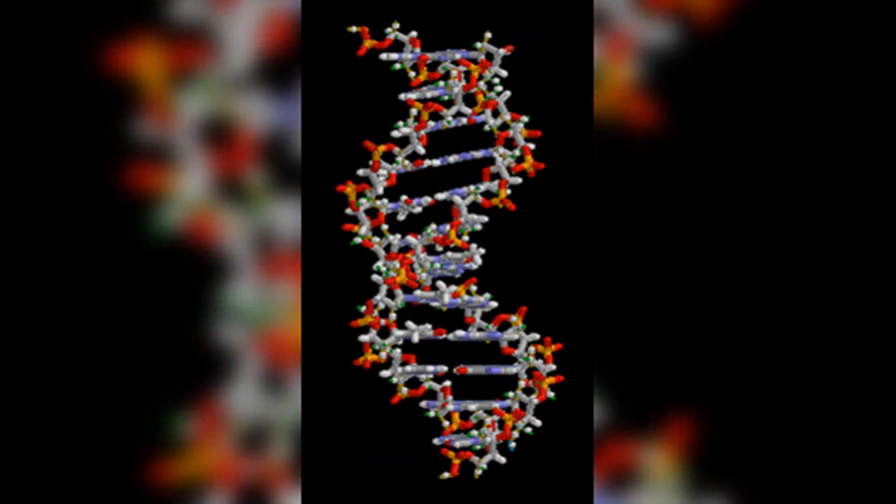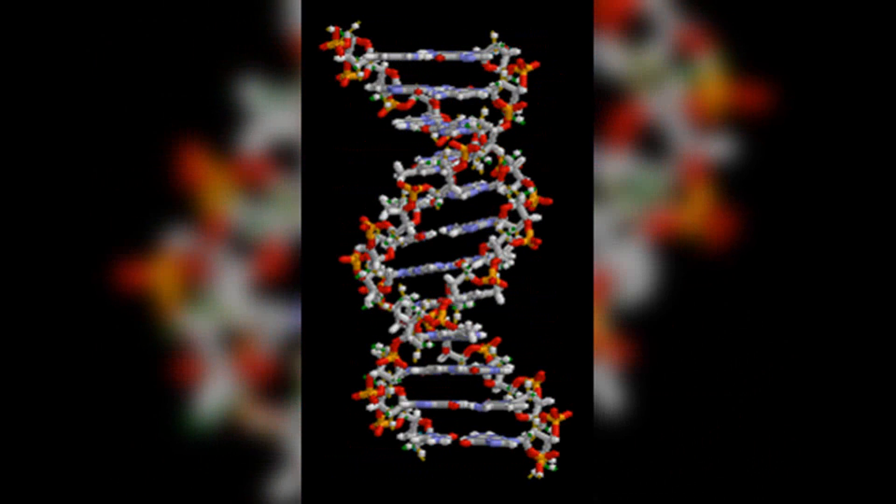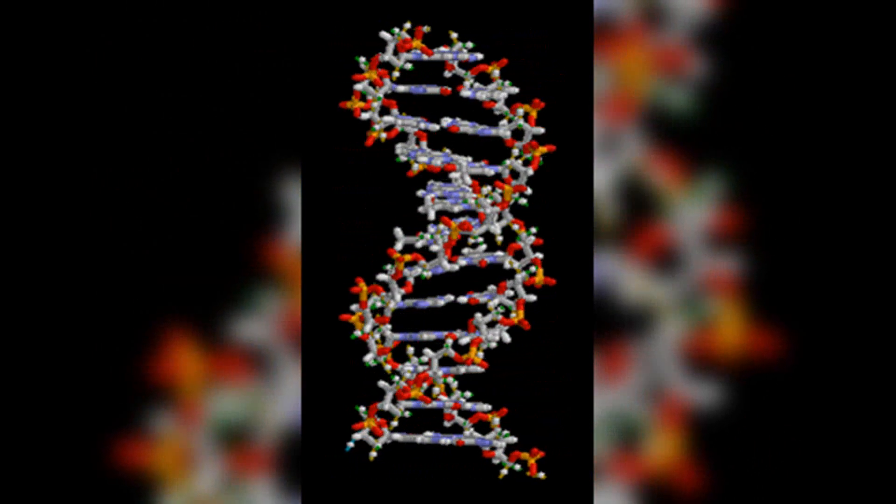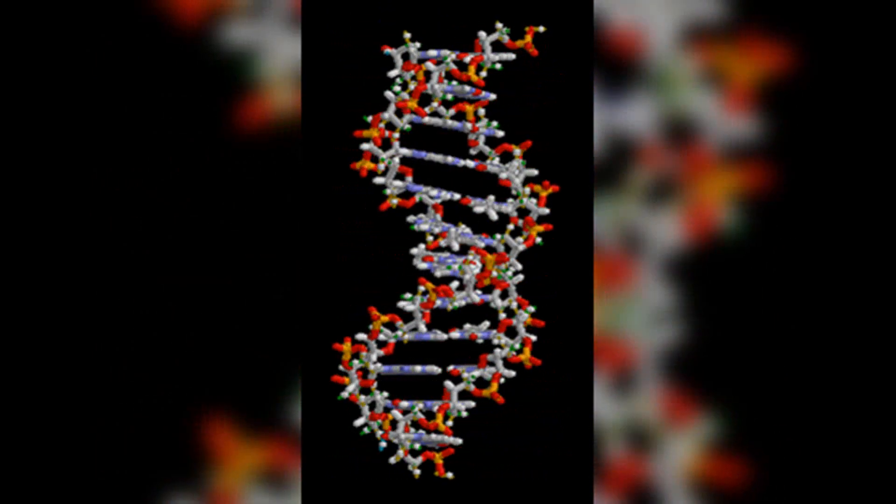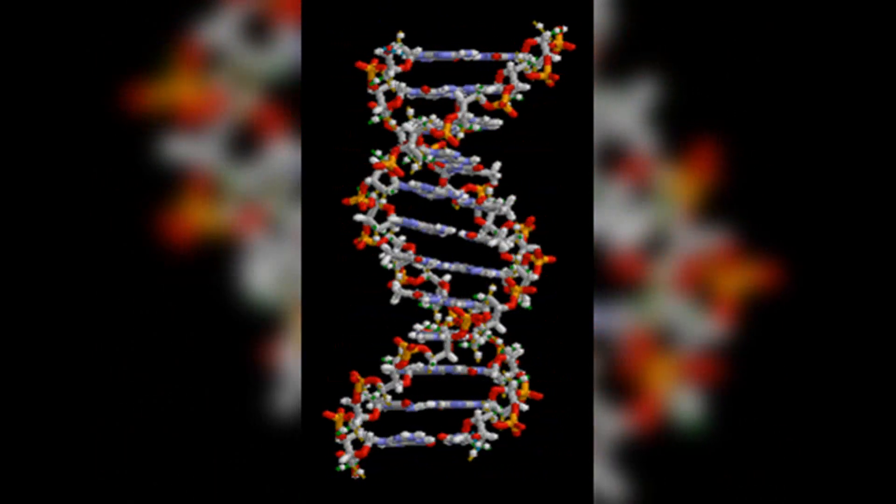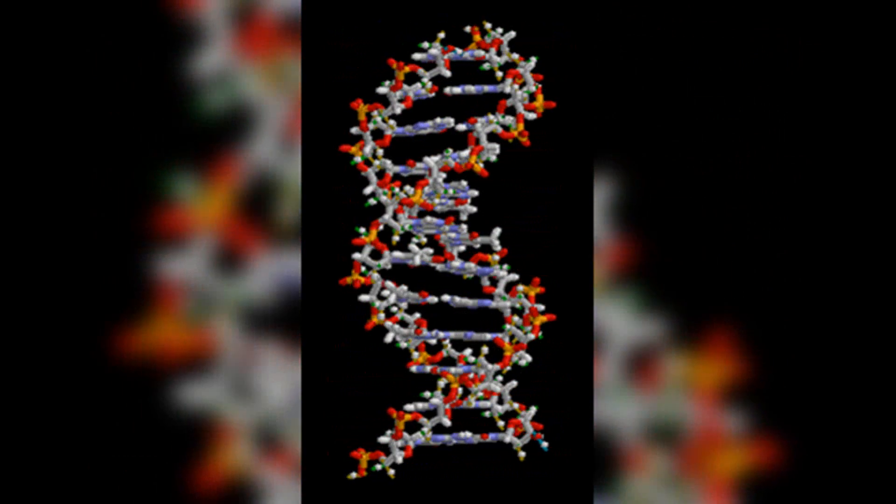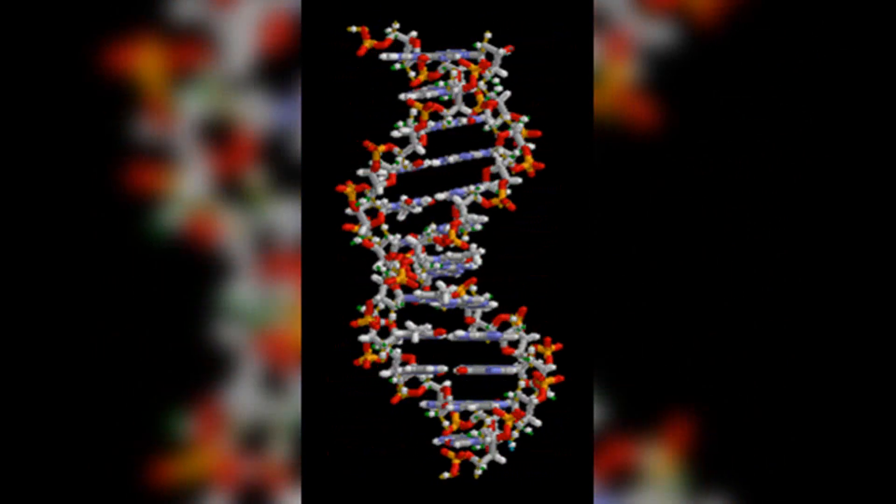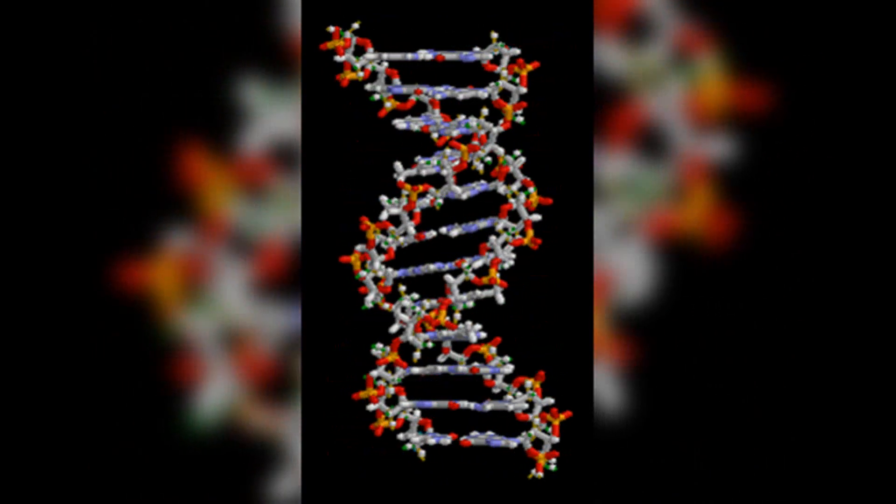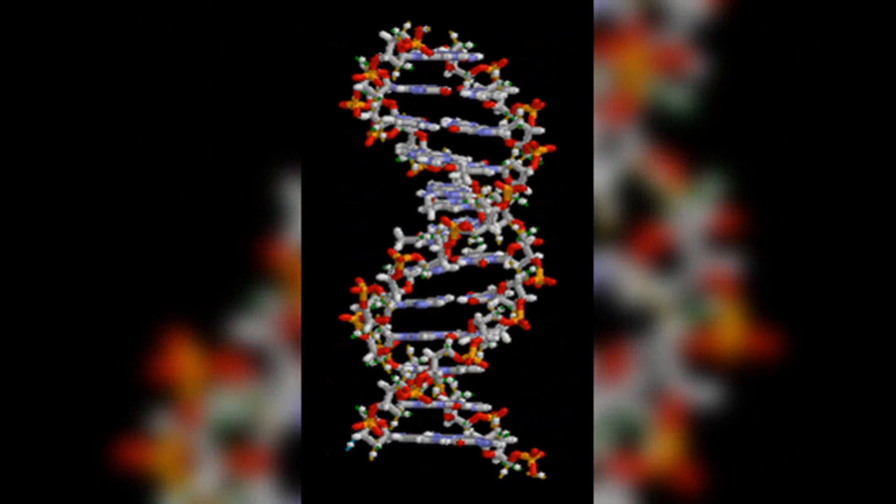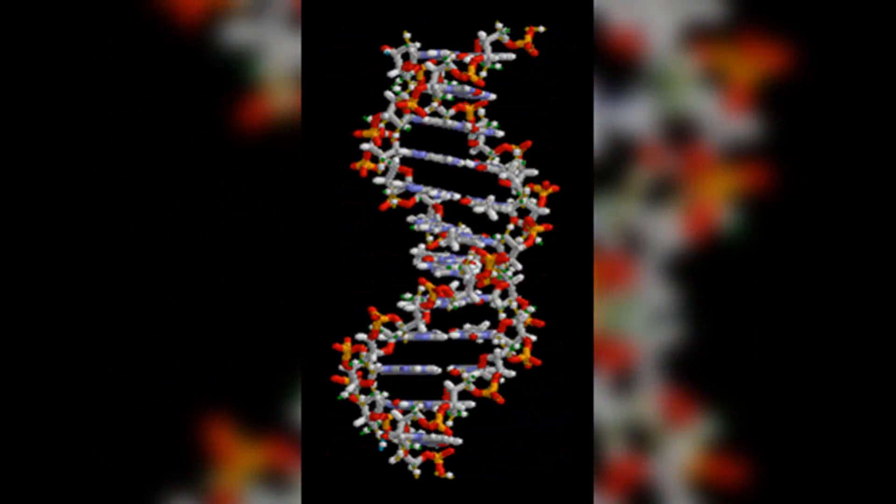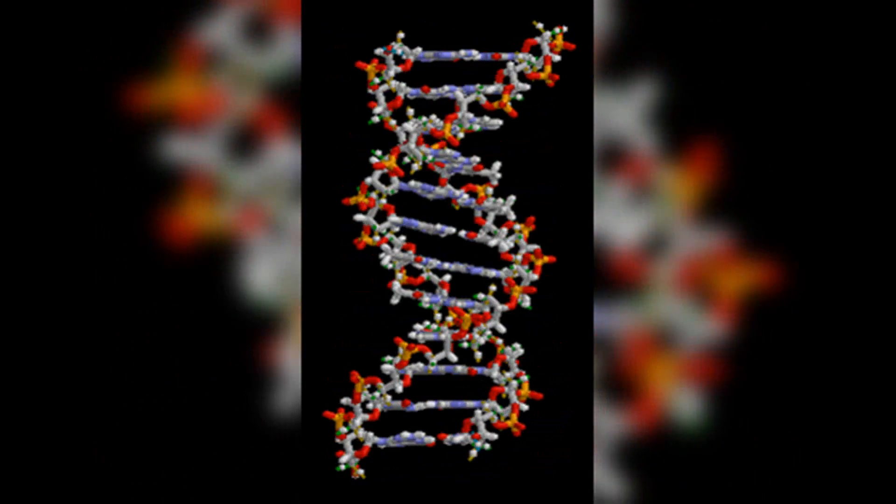MicroRNA (miRNA): miRNAs are small RNA molecules that regulate gene expression by binding to messenger RNAs (mRNAs). This binding can lead to degradation of the target mRNA or inhibition of its translation, thereby controlling the amount of protein produced from that mRNA.